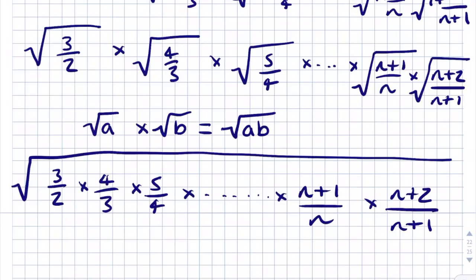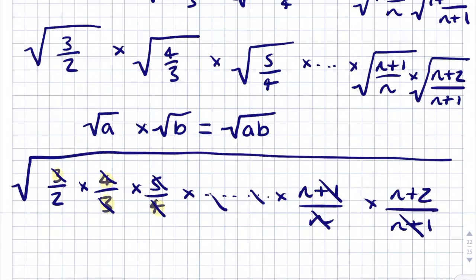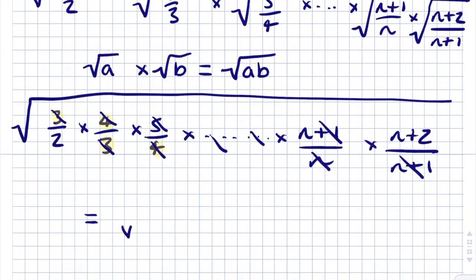Now the clever part: when we multiply all these fractions, terms cancel telescopically. The 3s cancel, the 4s cancel, the 5s cancel, and so on. The n cancels and the (n+1) cancels, so the whole product converges to √((n+2)/2).